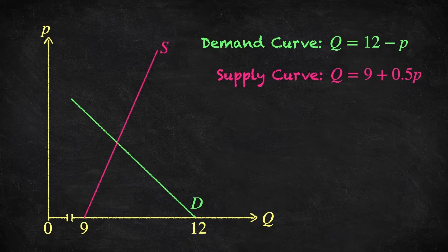An important thing to notice is that the price of coffee is determined exogenously — that is, it's determined outside of our model. Neither the consumer nor the firm has any power to affect the market price. This is what we mean when we say we are analysing a competitive market. Consumers and firms simply observe the price and respond.